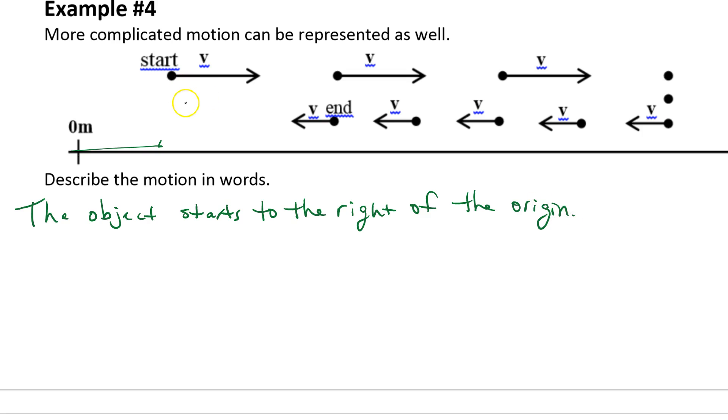This would be at time equals zero, that would be the first dot. This would be at time equals one, time equals two, time equals three. So for the first three seconds it travels at, and these arrows are the same length, so it travels at a constant velocity for three seconds.